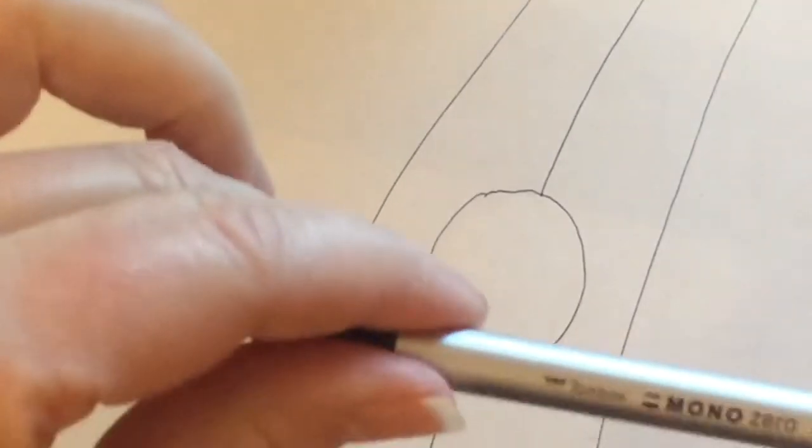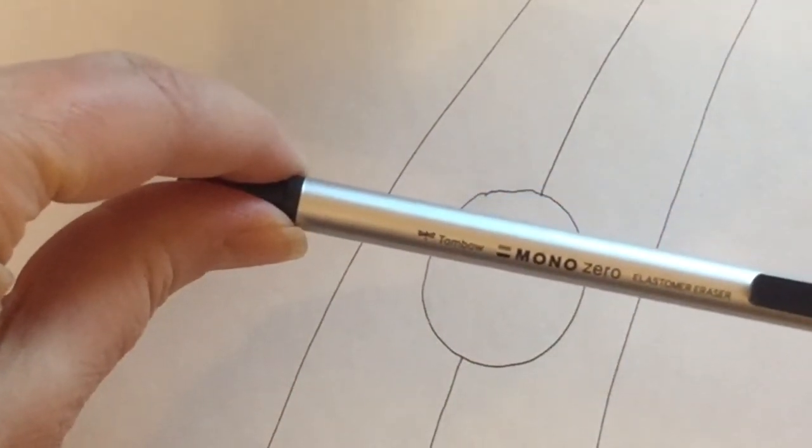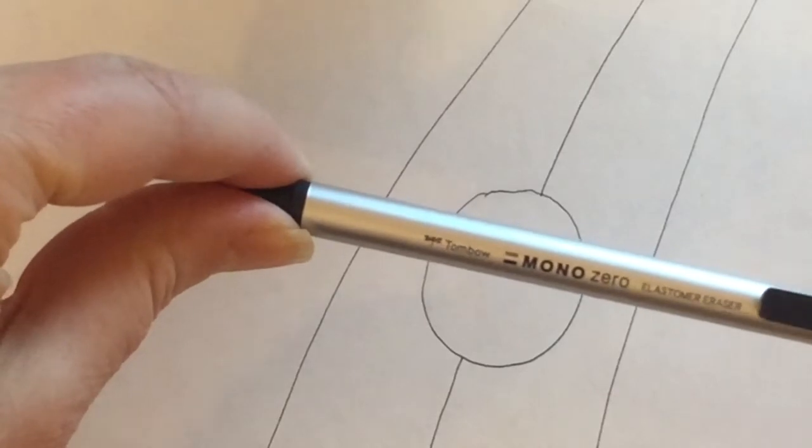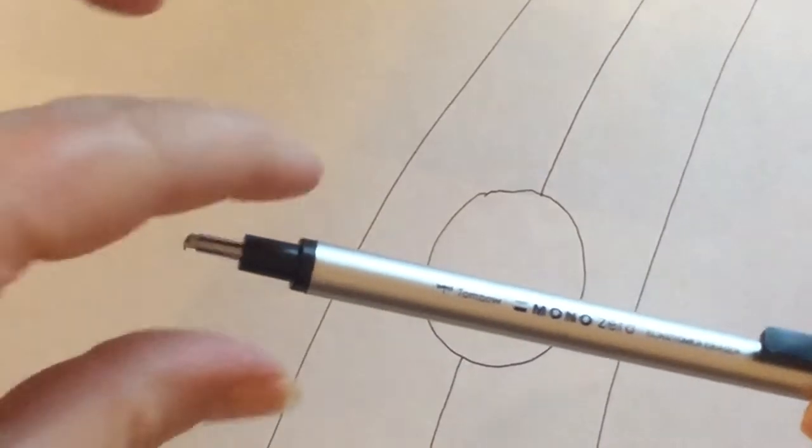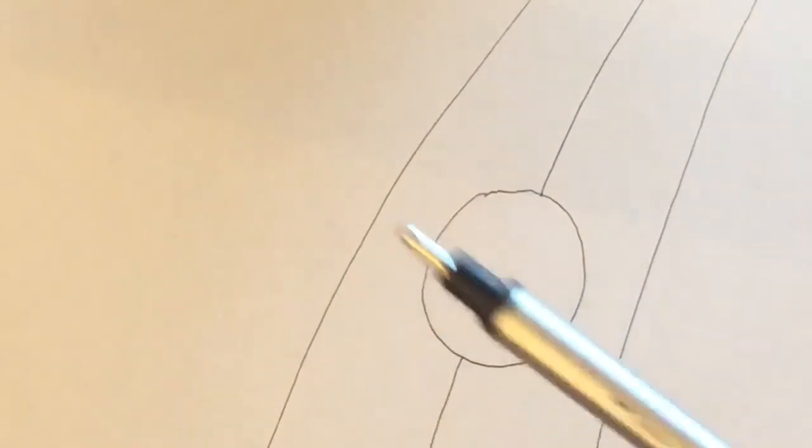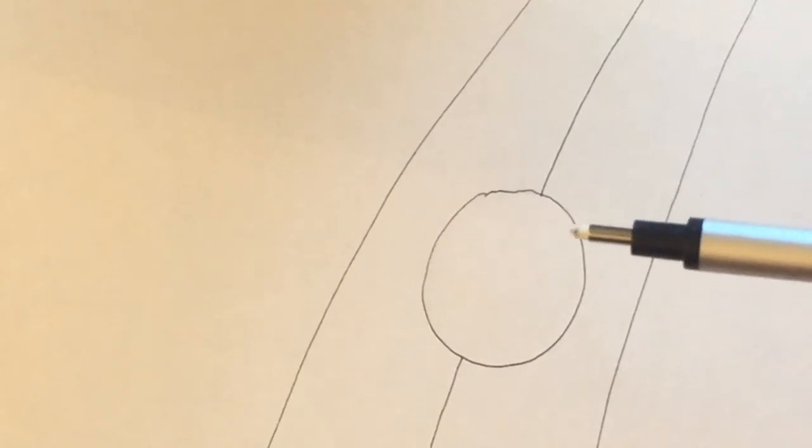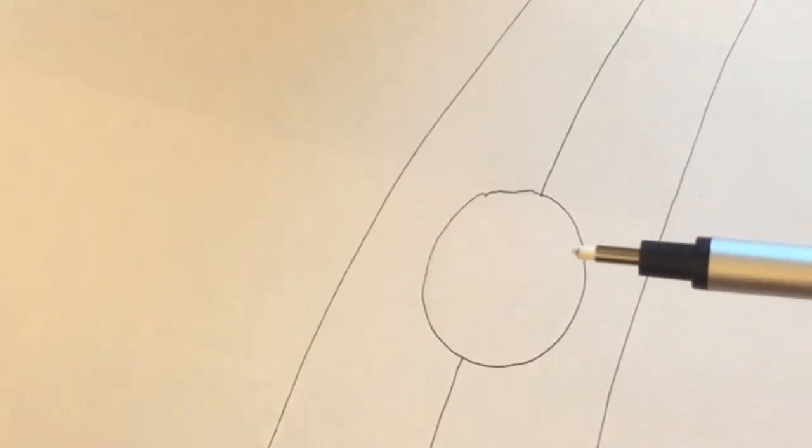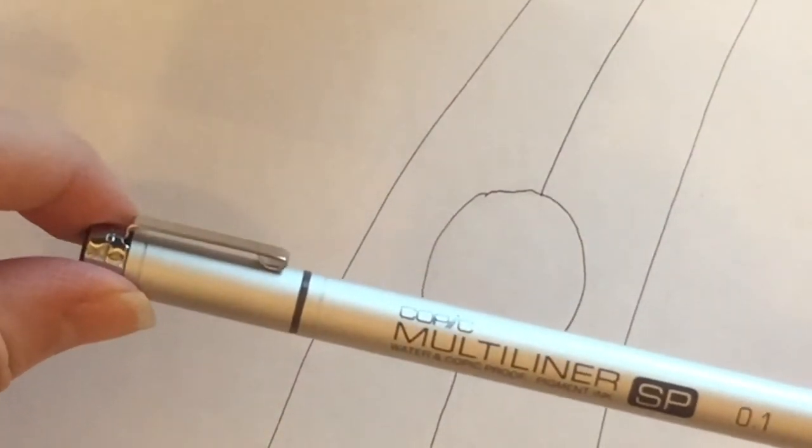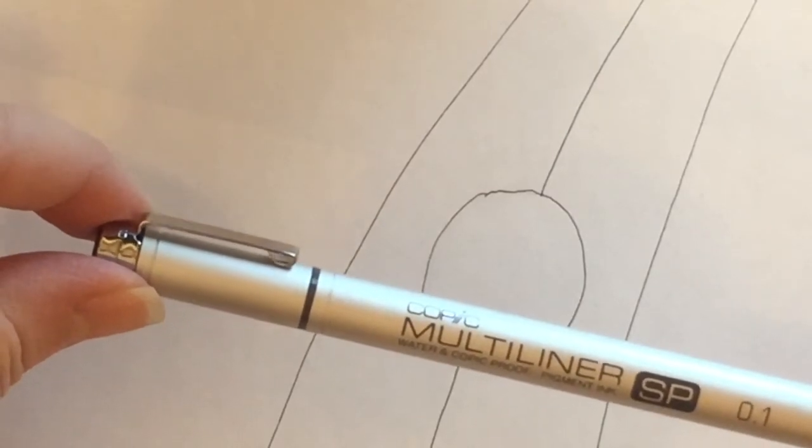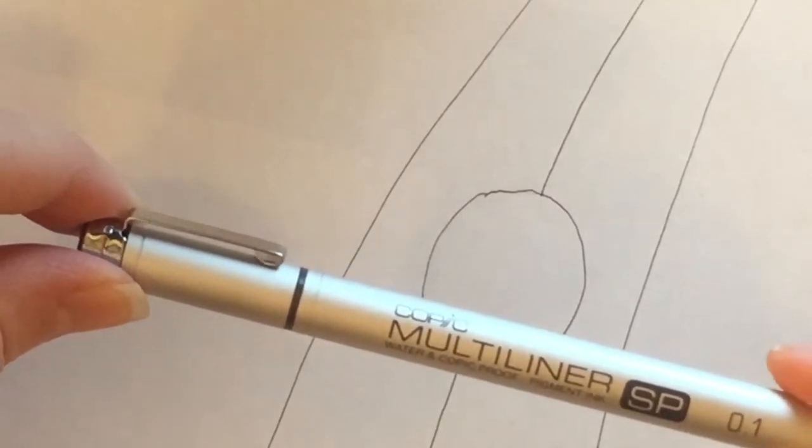I'll also use if I need it a mono zero elastomer eraser which is by Tombow, which I love. You can see from the point that you can get into very tiny little spaces and it's also very cool because it's kind of like a mechanical pencil. You can push it out or push it back in. Now to draw this basic outline I used a Copic multiliner. You can use whatever thin liner you want from Crayola to Copic. This one is 0.1 and it's waterproof.